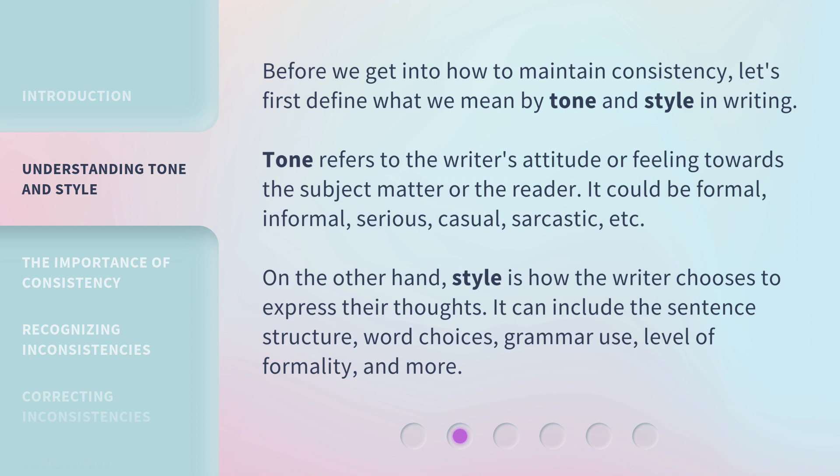It could be formal, informal, serious, casual, sarcastic, etc. On the other hand, style is how the writer chooses to express their thoughts. It can include the sentence structure, word choices, grammar use, level of formality, and more.